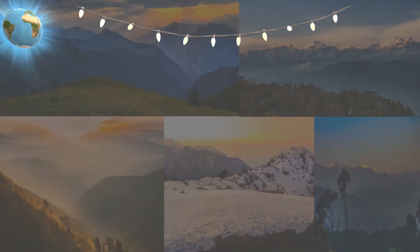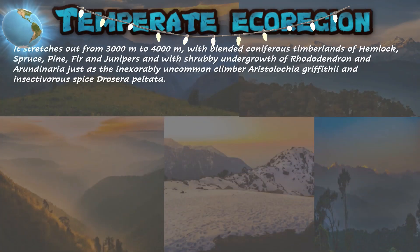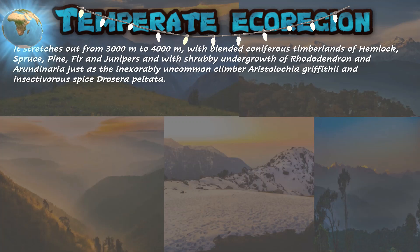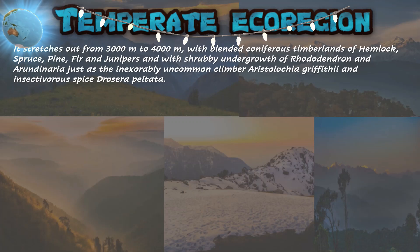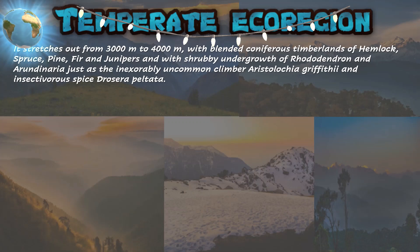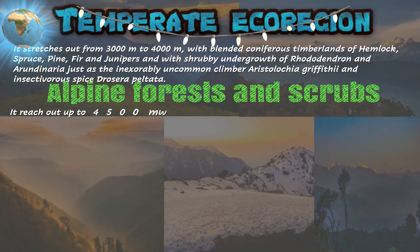The third is the temperate eco-region, stretching from 3,000 meters to 4,000 meters, with mixed coniferous forests of hemlocks, spruce, pine, fir, and junipers, and with shrubby undergrowth of Rhododendrons and Arundinaria, as well as the rare climber Aristolochia and insectivorous species Drosera peltata.